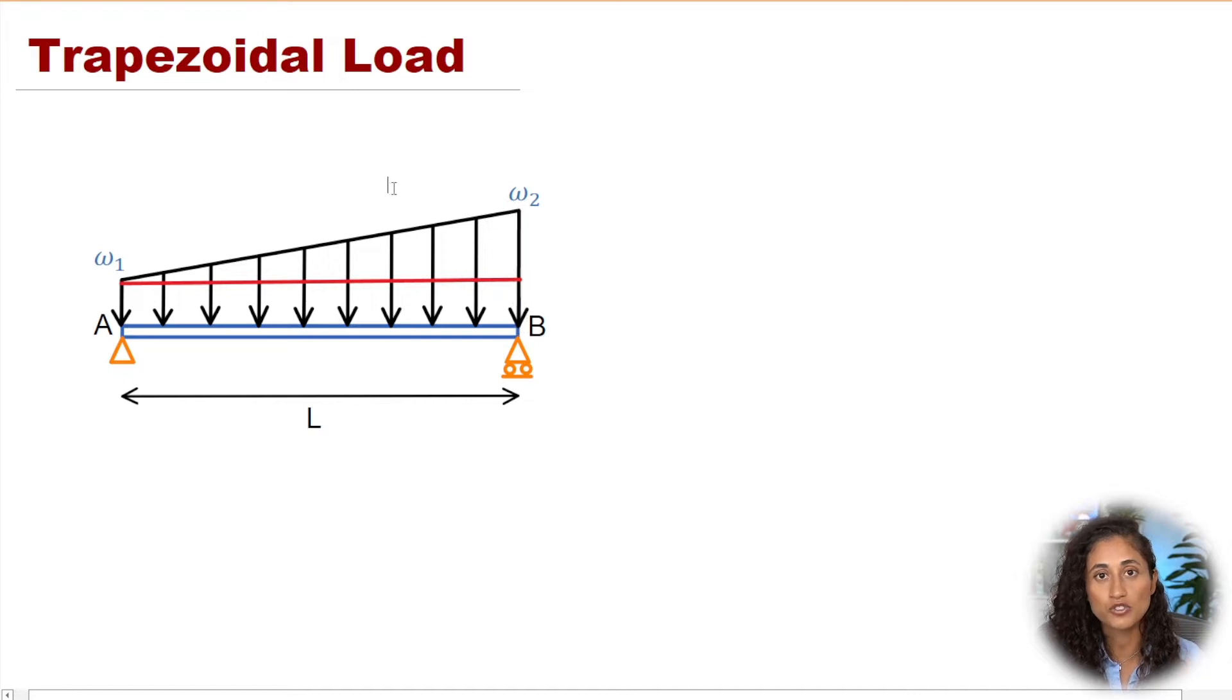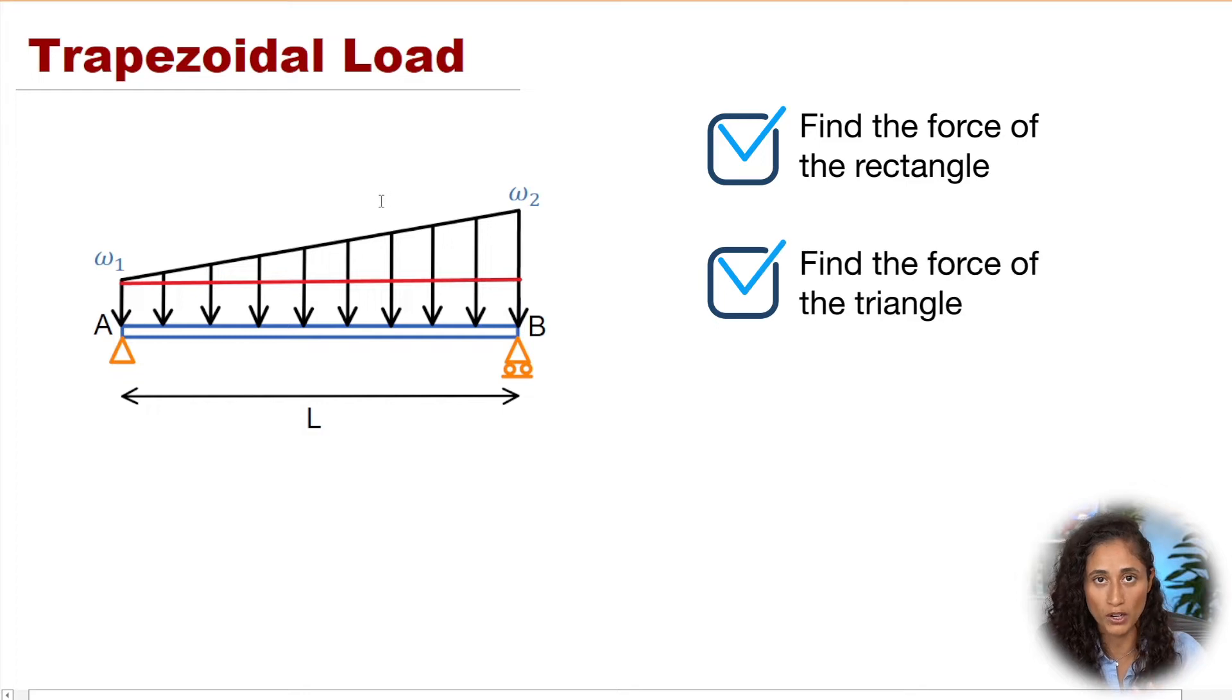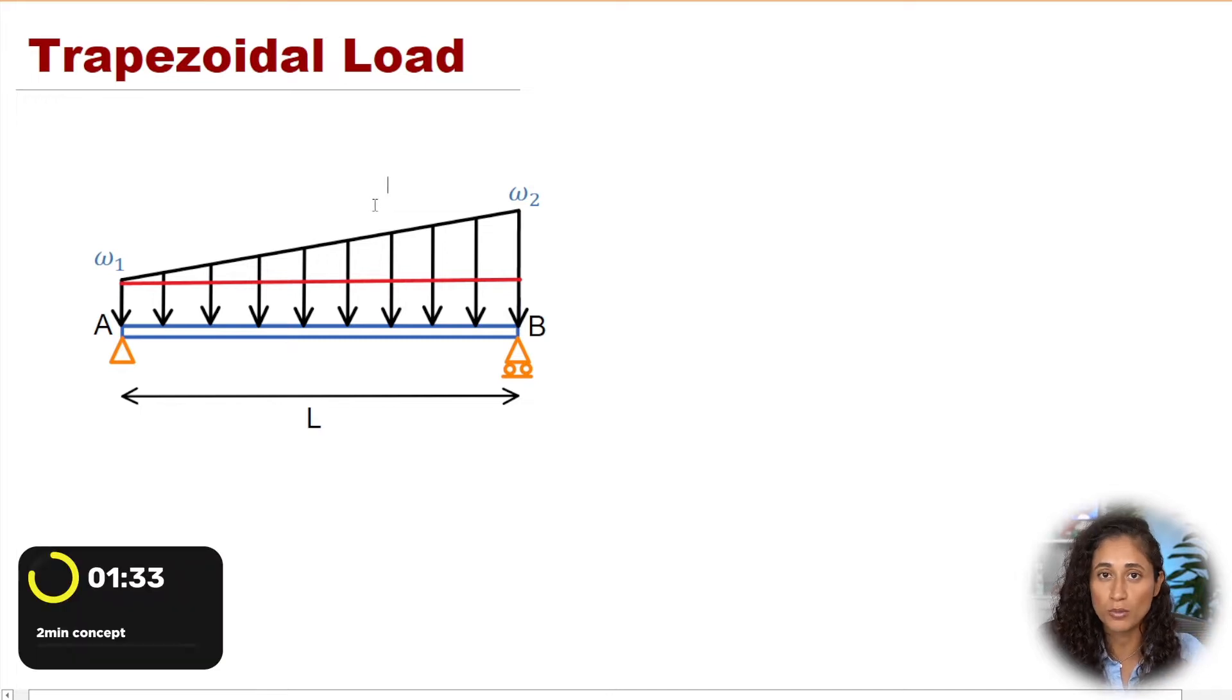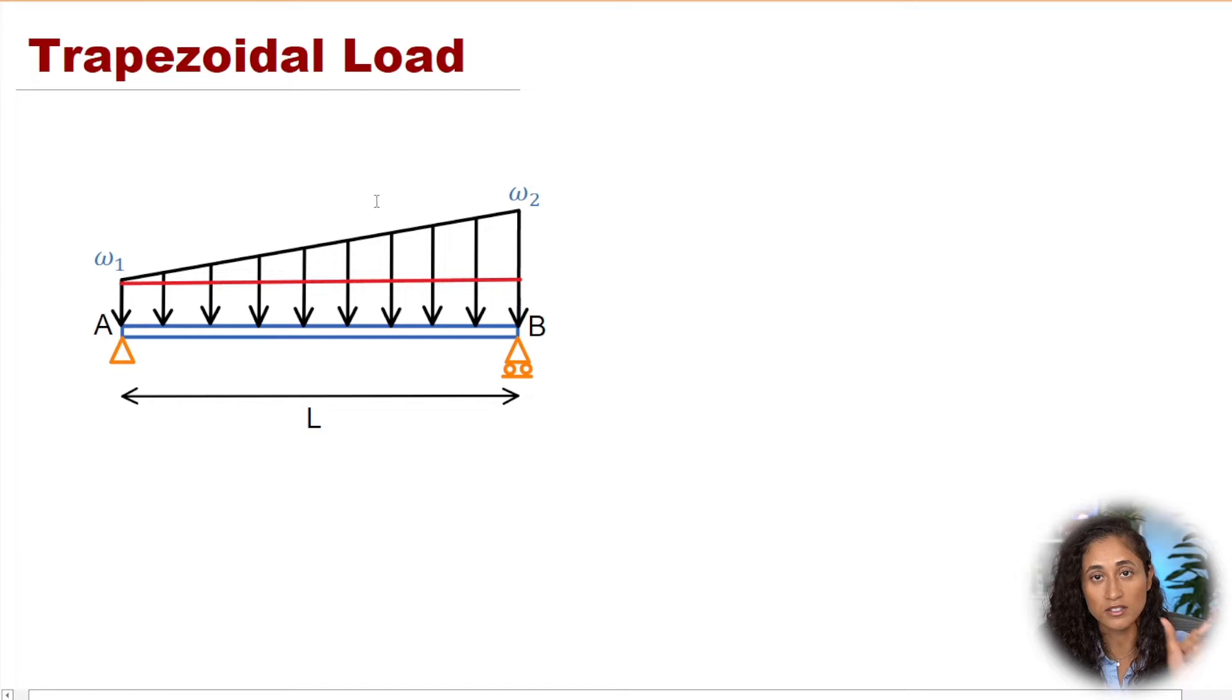First, we need to find the force of the rectangle and then the force of the triangle. To find the reactions, we need to set up our moment equation. If you remember, moment equals force times distance, the moment arm. So first we find the force, then we find the moment arm.